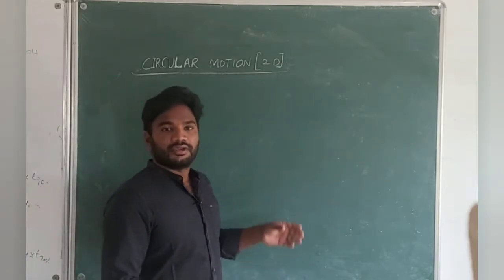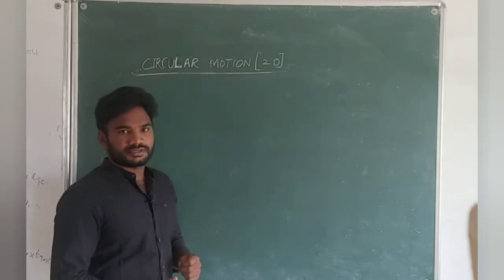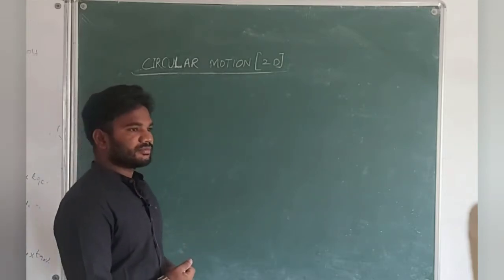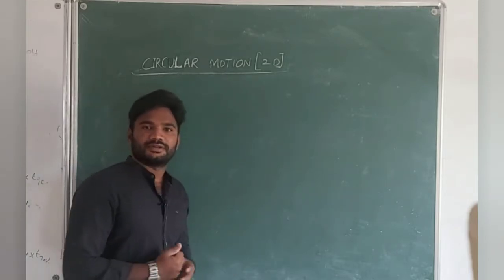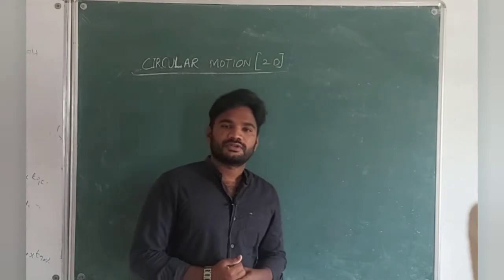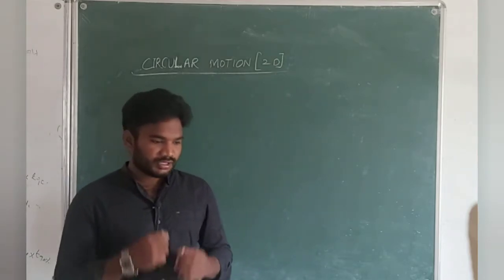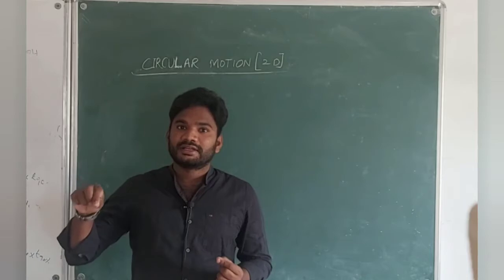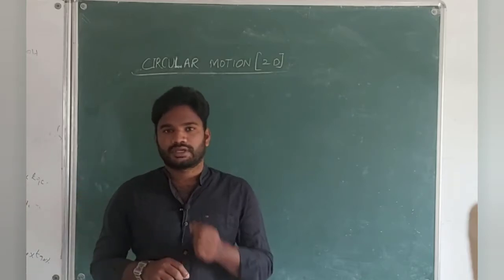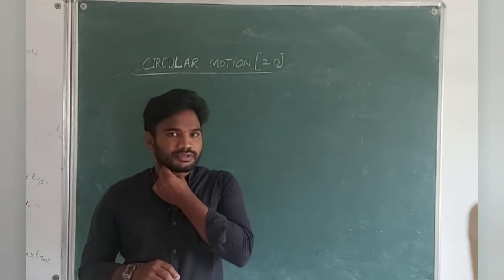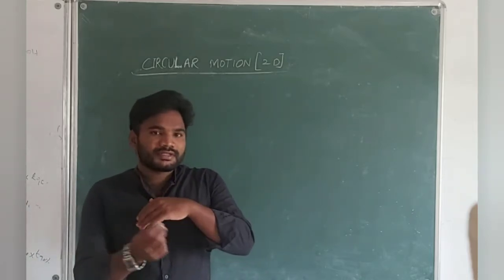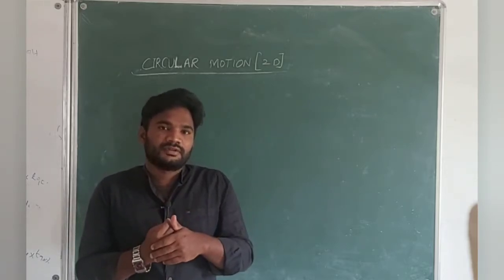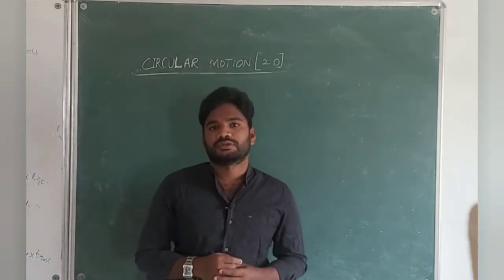First of all, we have to know what is circular motion. I will tell you one simplest statement here. Earth is in circular motion with respect to the sun. When the earth is revolving around the sun, then the earth is in circular motion. Earth also rotates itself — that is called rotatory motion.